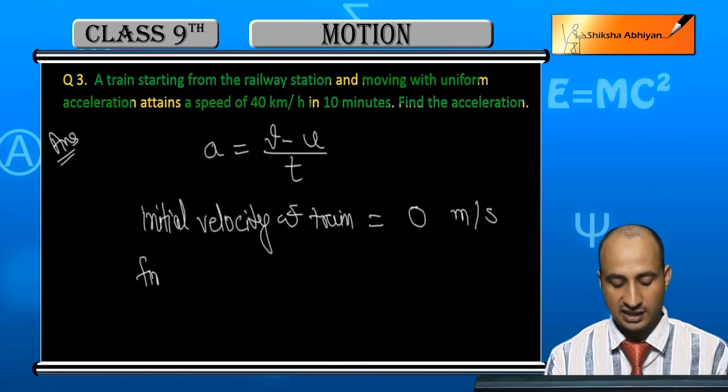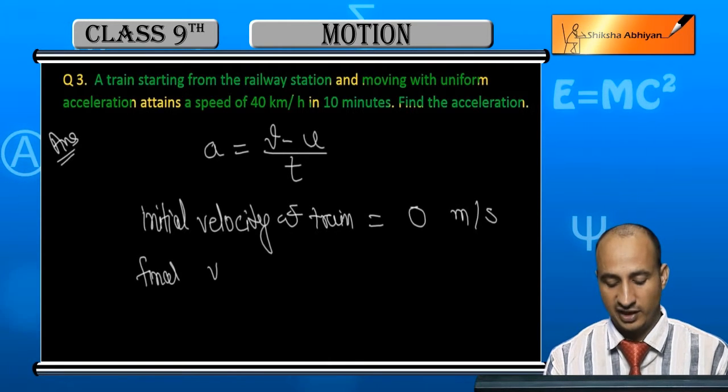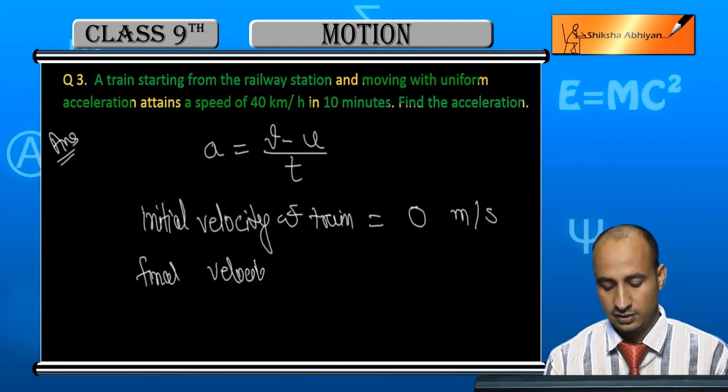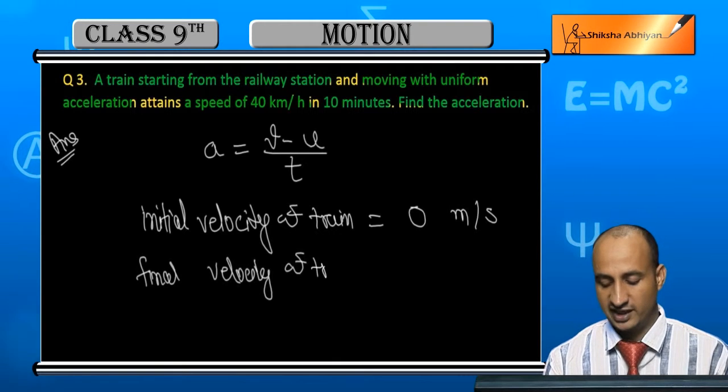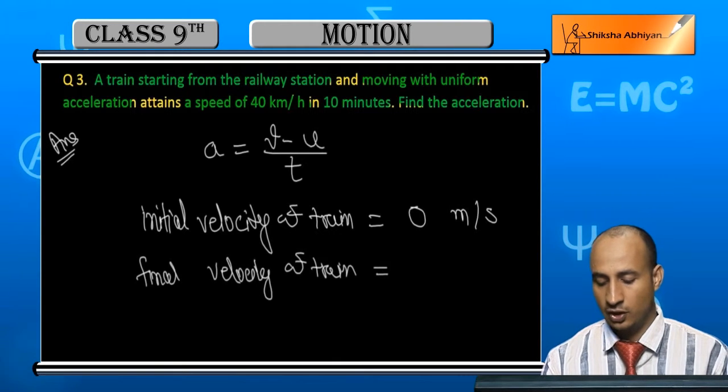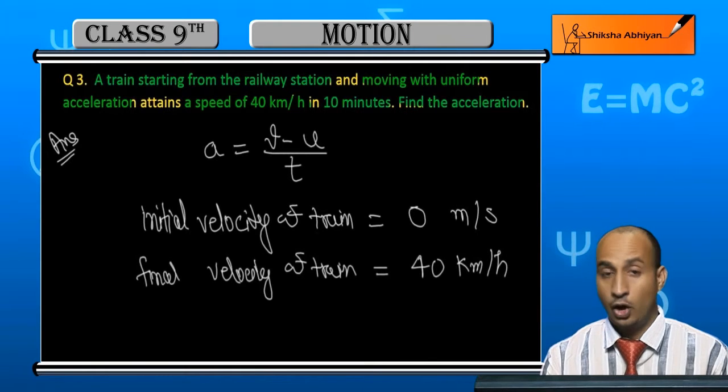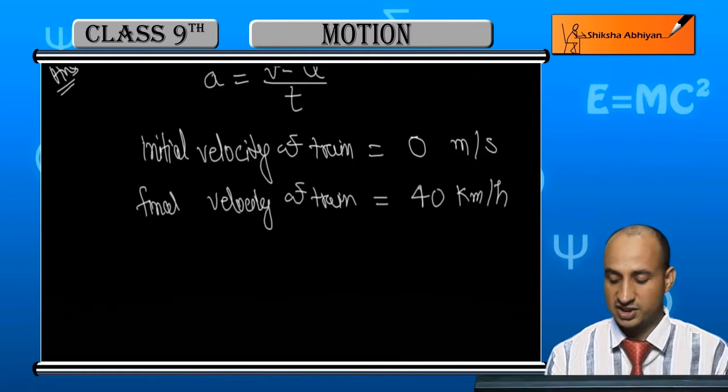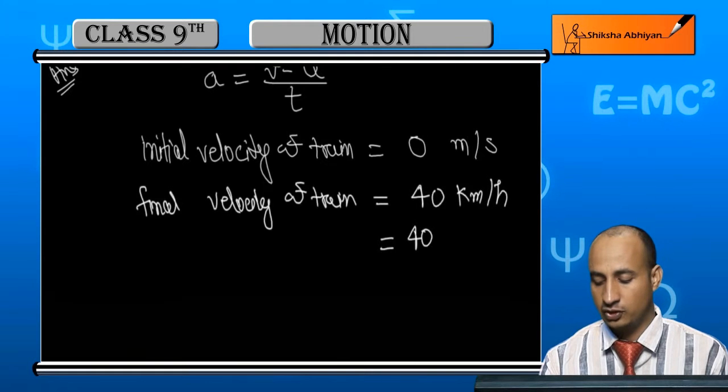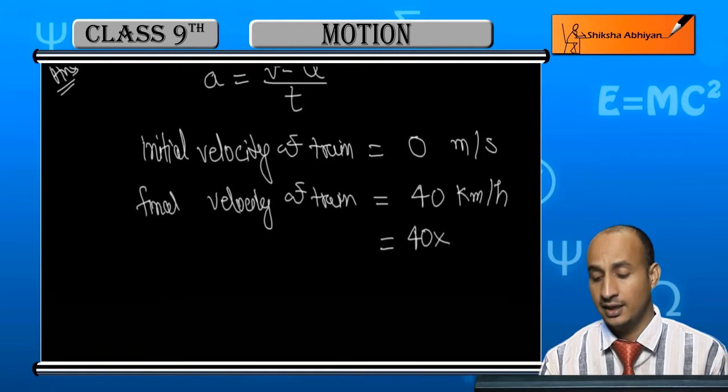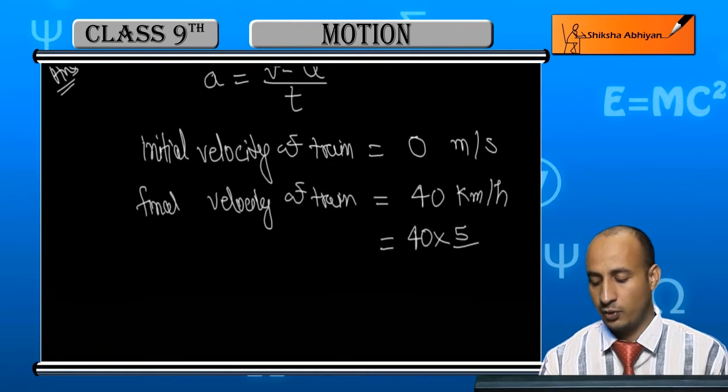And final velocity of train is 40 km per hour. And for this change to meter per second, 40 multiply by 5 upon 18.